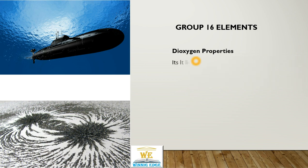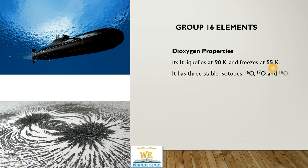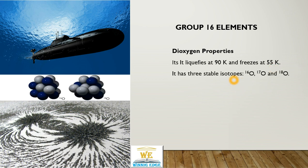Among the Dioxygen properties, its liquefaction temperature is 90K and it freezes at 55K as its melting point. There do exist 3 stable isotopes, among these Oxygen-16 and Oxygen-18 are the most abundant isotopes that exist in nature.